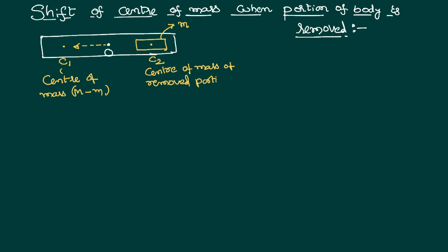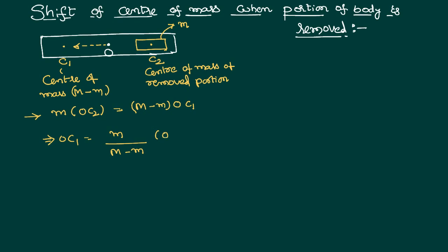We have removed a small portion from the body. Based on the concept that the algebraic sum of moments about the center of mass always remains constant — as we proved in the previous case — we can write M1 X1 equal to M2 X2. Taking M1 as the removed mass, X1 about point O gives: m times OC2 equals remaining mass (M minus m) times OC1. Therefore, OC1 equals small m divided by (capital M minus small m), multiplied by OC2.